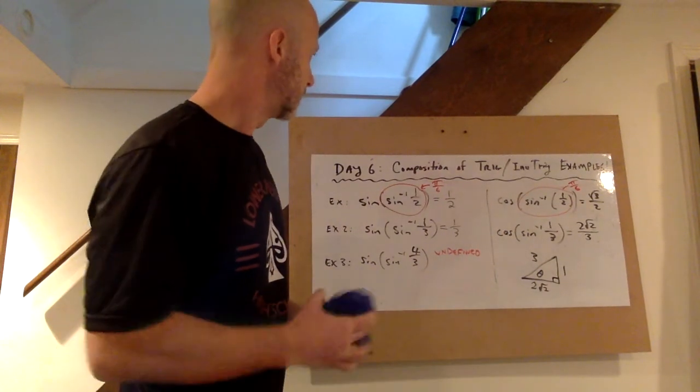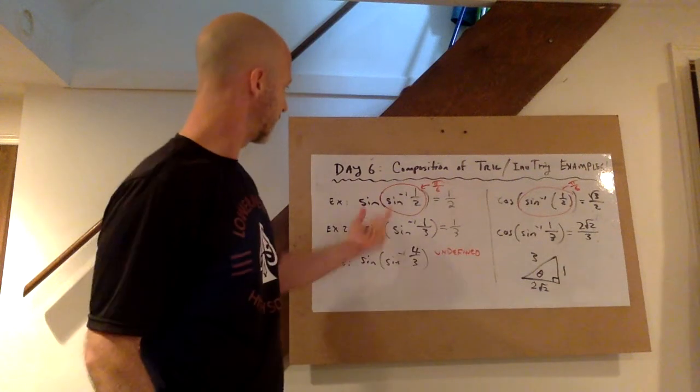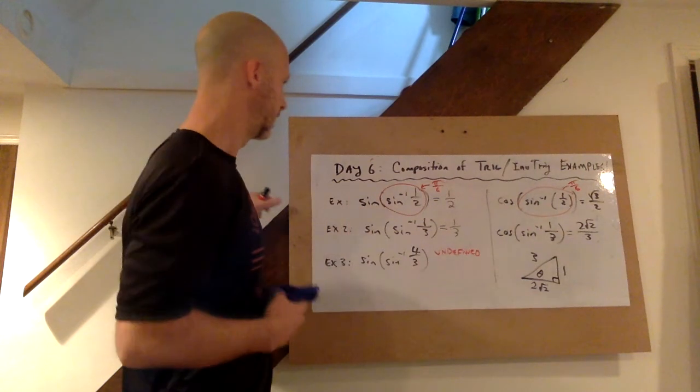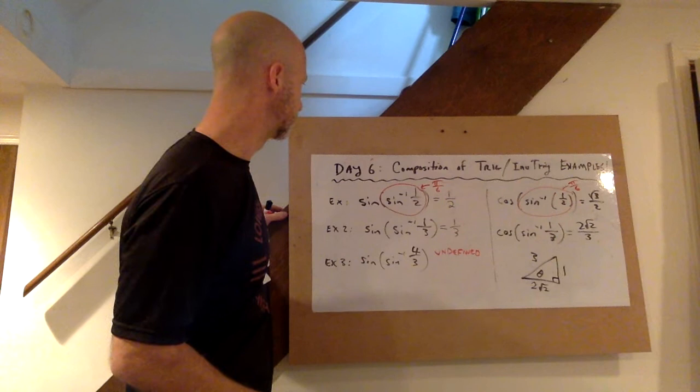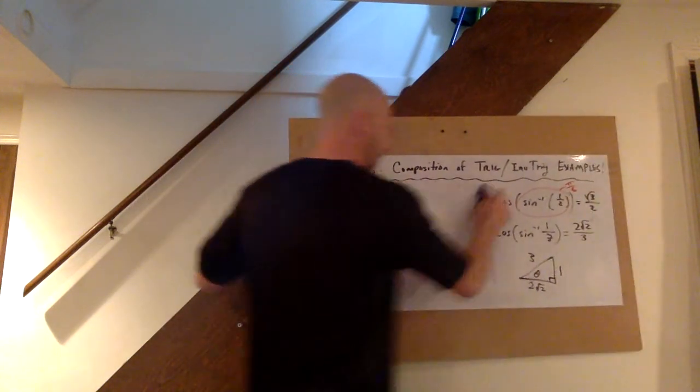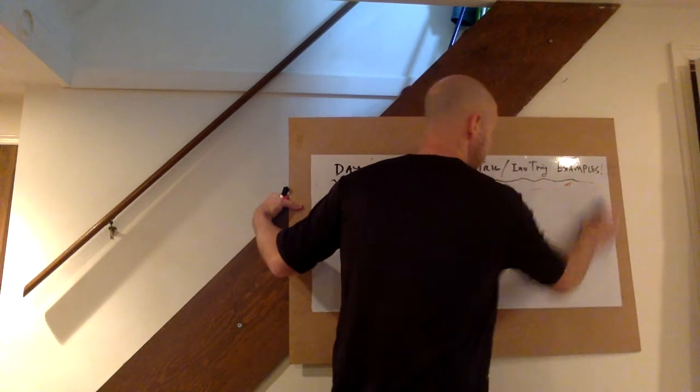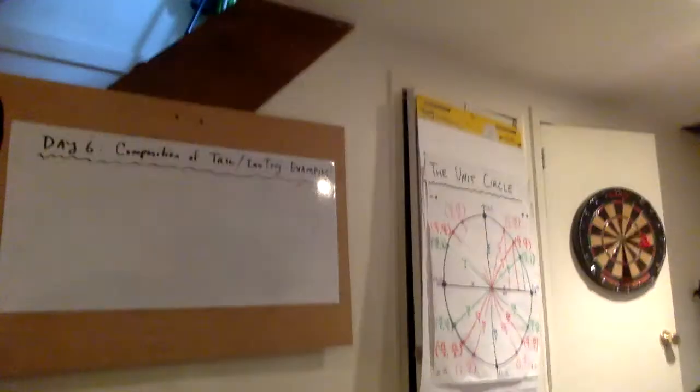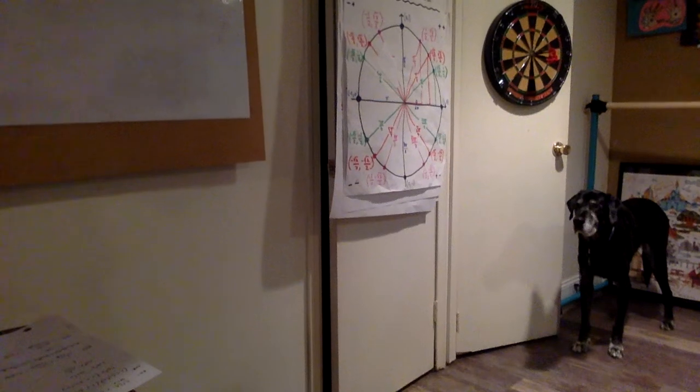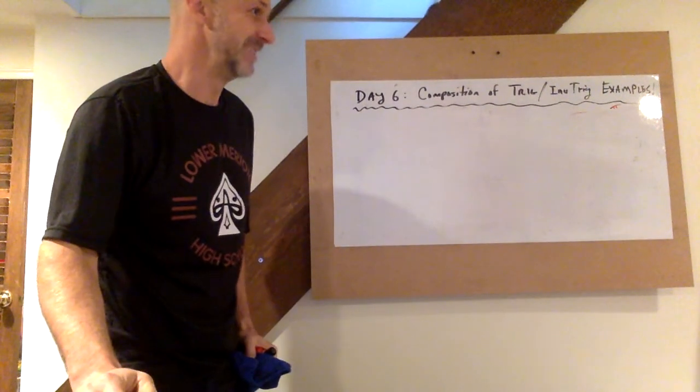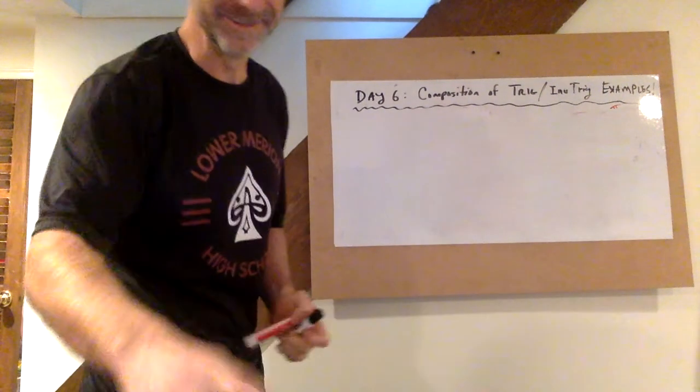Let's look at a couple other problems, just a few more examples where I flip the order where the inverse trig function happens on the outside. Some different strategies that we can use to work those problems out. Just so you guys know, my dog is anxiously awaiting his morning walk. He can't wait until I'm done my video. He's been doing this just about every morning. Almost done.